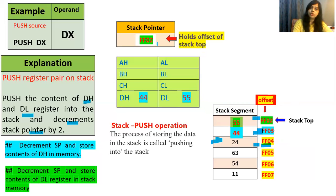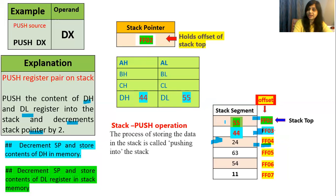So this is the operation of push. Remember: first it will decrement the contents of the stack pointer, then it will transfer the contents of DH register into that memory location, then again it will decrement the stack pointer, and then it will transfer the contents of DL register into that memory location.